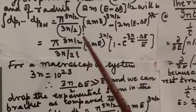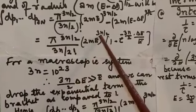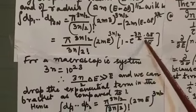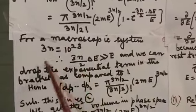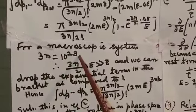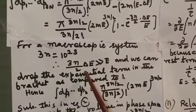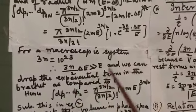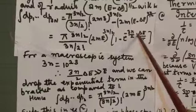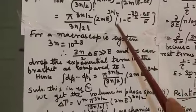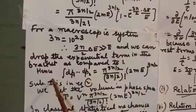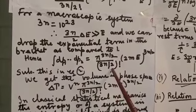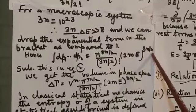This becomes pi^(3N/2) / (3N/2)! * (2mE)^(3N/2) * [1 minus (1 minus delta E / E)^(3N/2)]. For a macroscopic system, 3N is of order 10^23. Therefore 3N/2 * delta E is much much greater than E, and we can drop the exponential term in the bracket compared to 1, as it is very very small. So the integral becomes: integral dp1 to dp3N = pi^(3N/2) / (3N/2)! * (2mE)^(3N/2).